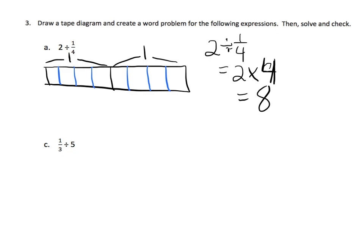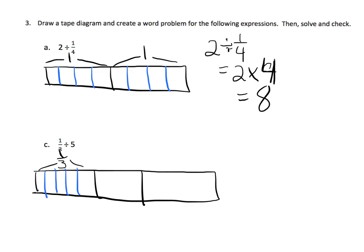So one third divided by five. So one third. So we're going to first begin by drawing one third. So here is our one third. And then it says we're supposed to divide that up into five.